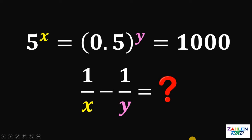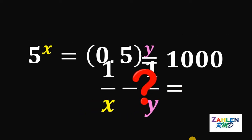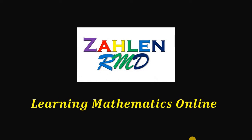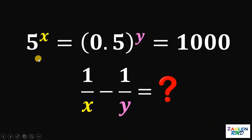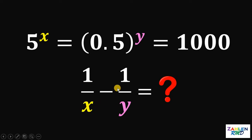Good day everyone. Here's our math challenge for today. If we have 5 raised to x equals 0.5 raised to y equals 1000, then what is the value of 1 over x minus 1 over y?